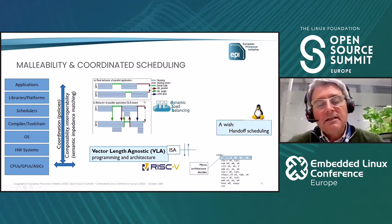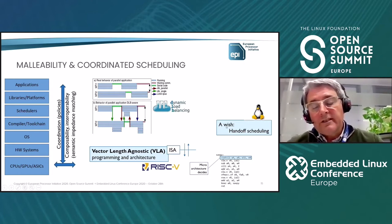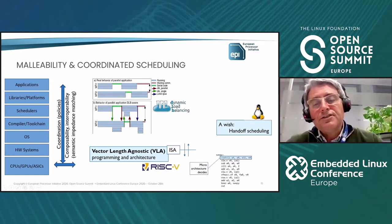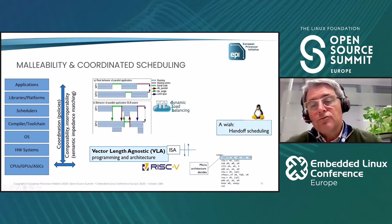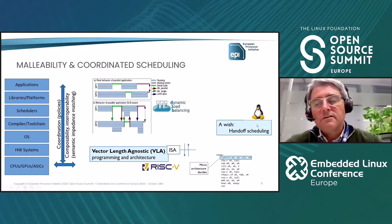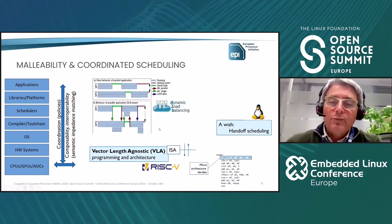One thing that would be very nice is for the decisions taken by the runtime to be coordinated across levels — coordinated with the Linux kernel, for example. It would be nice to have scheduling mechanisms by which information that higher levels possess is communicated to the runtime for it to try to satisfy, if possible. The operating system will always be in control, but it can probably benefit from hints that help improve the behavior of applications running on top of it.